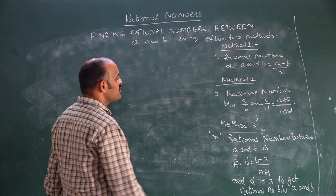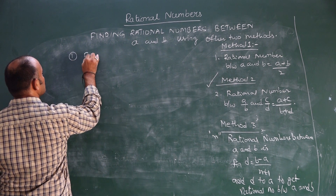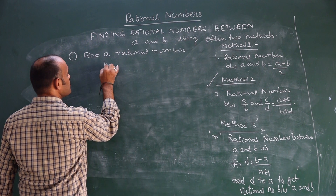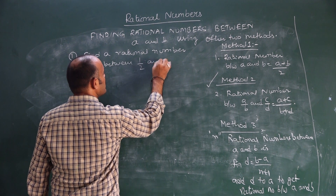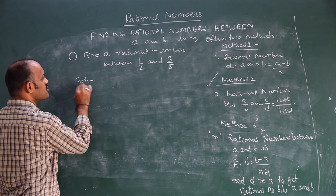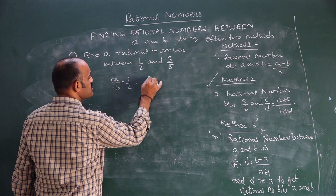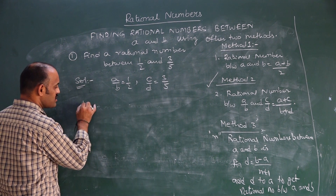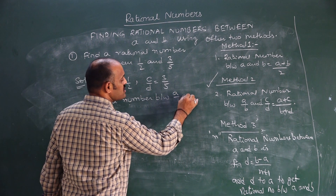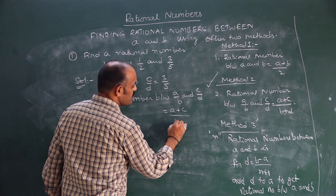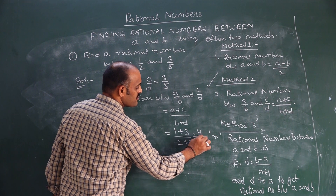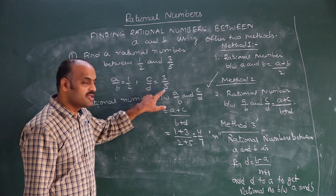Let's see how to find rational numbers using Method 2. Find a rational number between 1 by 2 and 3 by 5. Here, a by b is 1 by 2 and c by d is 3 by 5. The rational number between a by b and c by d is a plus c by b plus d. Adding the numerators: 1 plus 3 by 2 plus 5, which is 4 by 7. So 4 by 7 lies between 1 by 2 and 3 by 5.